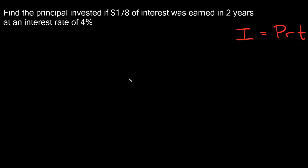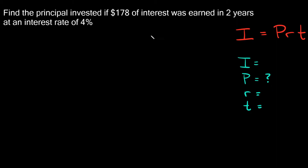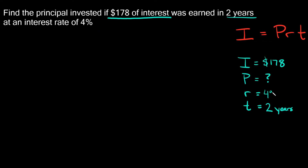Let's try a couple more. This problem says: find the principal invested if $178 of interest was earned in two years at an interest rate of four percent. It helps to write out what each variable equals. We don't know the principal. I is 178, T is 2 years, and the rate is four percent, which as a decimal is 0.04.